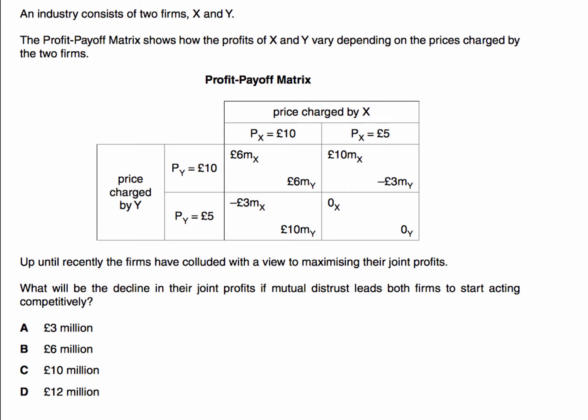An industry consists of two firms X and Y — a duopoly. The profit payoff matrix shows how the profits of these businesses vary depending on the prices charged by the two firms. You should be familiar with that if you've studied the prisoner's dilemma. Up until recently the firms have colluded with a view to maximizing their joint profits. What will be the decline in their joint profits if mutual distrust leads to both firms acting competitively — in other words, the breakdown of a price-fixing cartel?